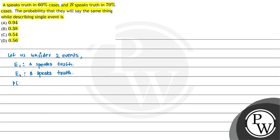The probability of E1 — A speaks truth in 60% of cases — so P(E1) = 60/100 = 0.6. The probability of E2 — B speaks truth in 70% of cases — so P(E2) = 70/100 = 0.7.